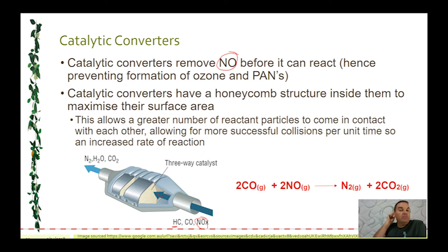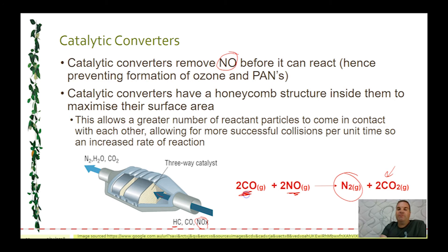The catalytic converter has a large surface area that molecules can stick to, which increases the rate of reaction. Carbon monoxide and nitrogen monoxide react to form nitrogen gas — which is harmless, making up 78% of the atmosphere — and carbon dioxide. While carbon dioxide can produce a greenhouse effect, carbon monoxide is an asphyxiant, meaning it prevents the absorption of oxygen into the bloodstream and can lead to death. It's much more beneficial to produce carbon dioxide than carbon monoxide and nitrogen monoxide, which contribute to photochemical smog.